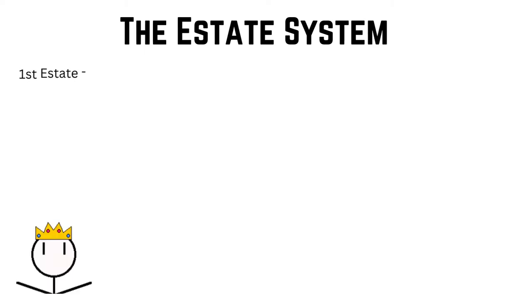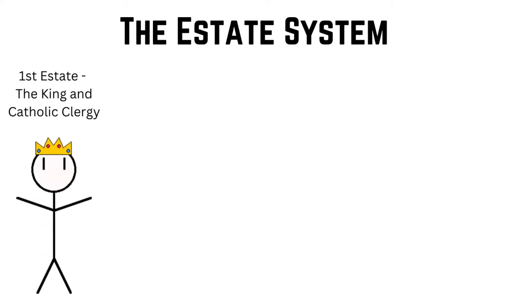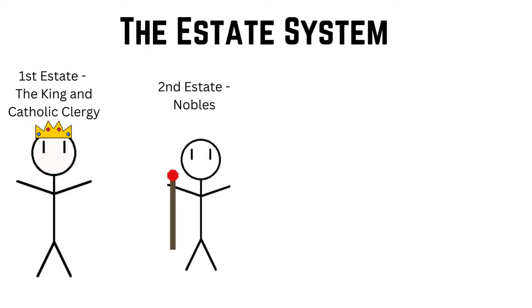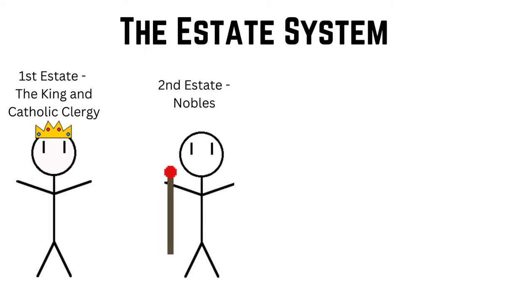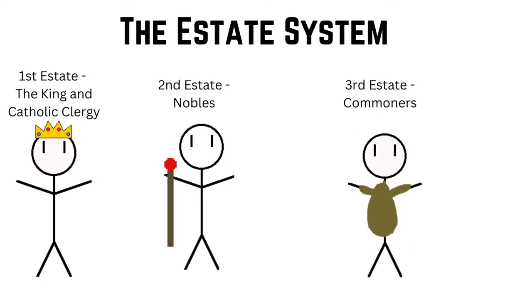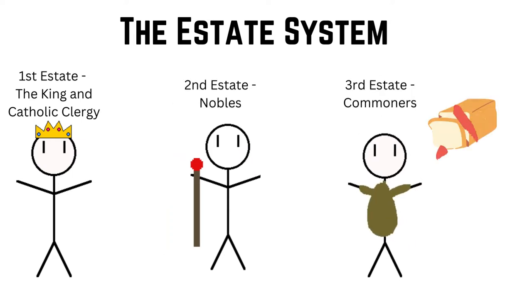The estate system was a kind of social hierarchy in France. The first estate was the king and the clergy — this estate had the most power. The second estate was the French nobility, who had a lot of money. The third estate was the commoners, the lowest estate, and they lived in hunger and poverty.